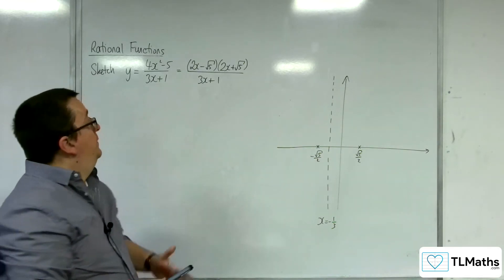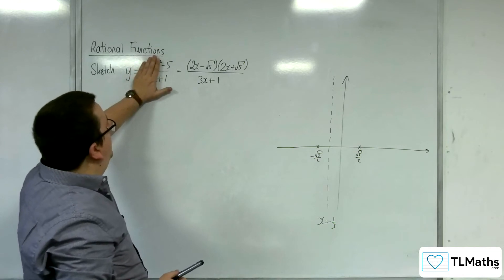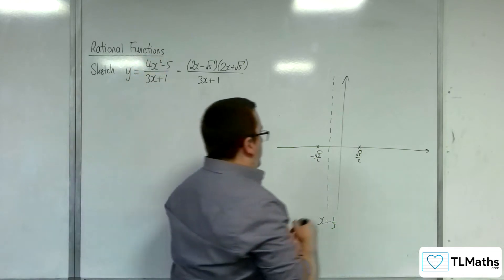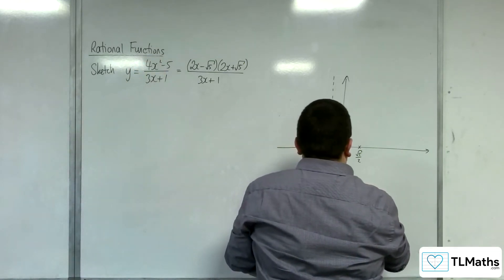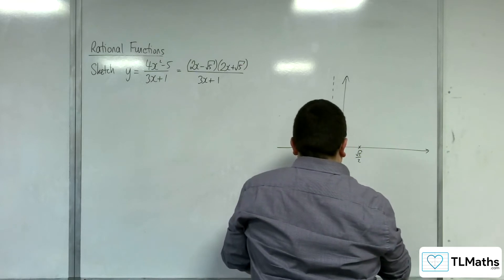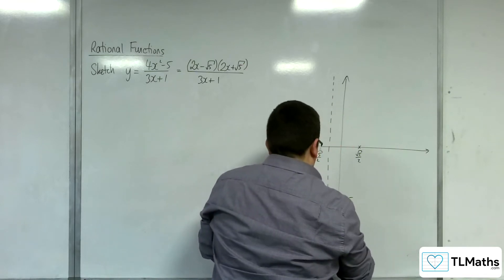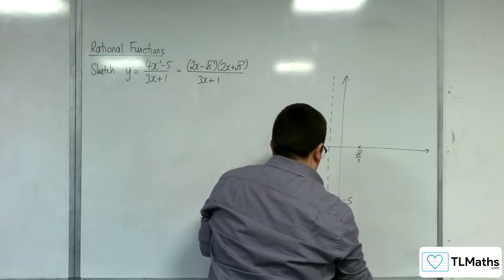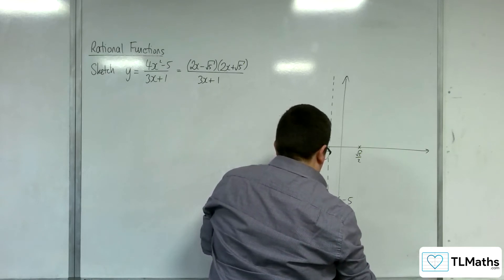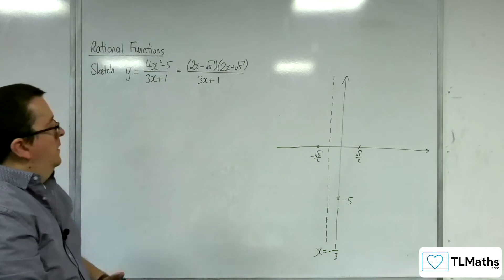How about where it crosses the y-axis? That's when x is zero, so that's minus 5 over 1. So minus 5. Let's just bring this down a little bit further.